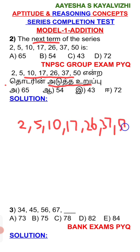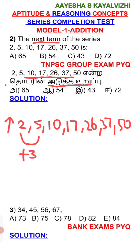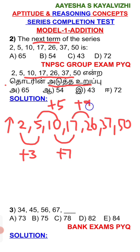So first, what we see between 2 and 5 — the addition is increasing. The difference is increasing. Addition is 3: so 2 plus 3 gives 5. Next, 5 plus 5 gives 10. Next, 10 plus 7 gives 17. Next, 17 plus 9 gives 26.